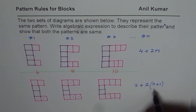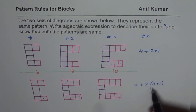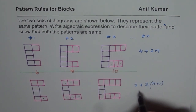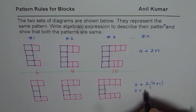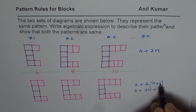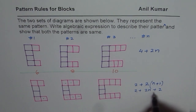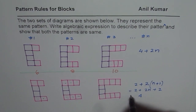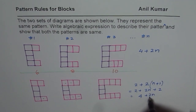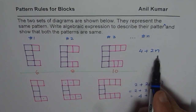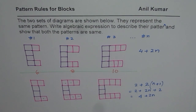The second part is we need to show that these two expressions are the same equations. Let's open the brackets: 2 + 2(n + 1) = 2 + 2n + 2. When you add 2 and 2, we get 4, so we get 4 + 2n. This expression is exactly the same as the previous expression.